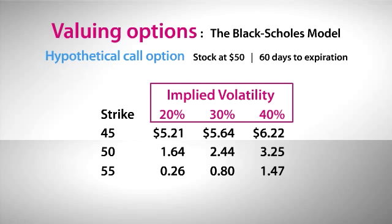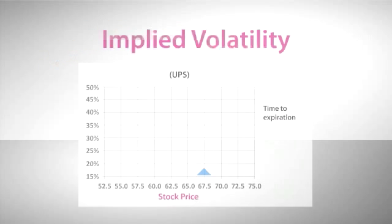Unfortunately, there's no one single value for implied volatility for a specific stock. Each strike and each expiration month trade differently. Let's go back to the example of UPS. Here's a chart that shows the implied volatility for call options that expire in one month, based on the actual prices of the options. The blue arrow shows about where the stock is trading. The out-of-the-money options have an implied volatility of about 25%, but the other options have different implied volatilities.